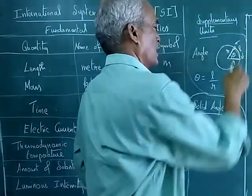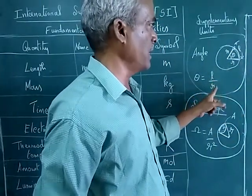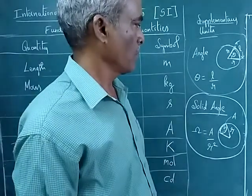So this is the length of the arc. Theta is equal to L by R.